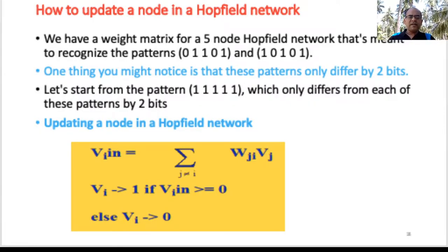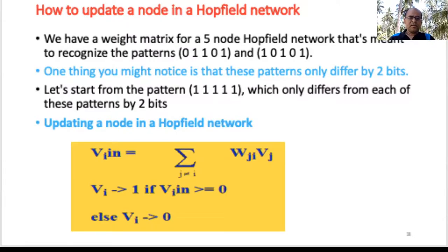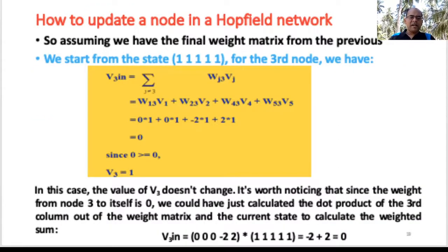Pattern [0, 1, 1, 0, 1] and pattern [1, 0, 1, 0, 1] differ by 2 bits — the first and second bits toggle. Starting with a pattern of all ones and applying the formula, we obtain some output. It is worth noting that since the weight from node 3 to itself is 0, we could simply compute the dot product of the third column. V3_net equals 0.